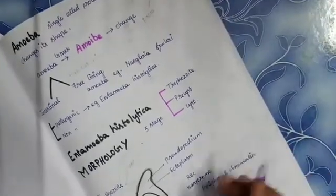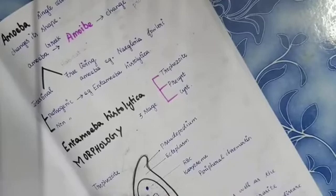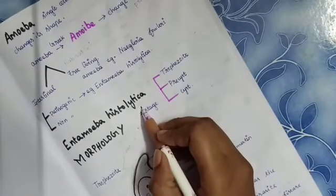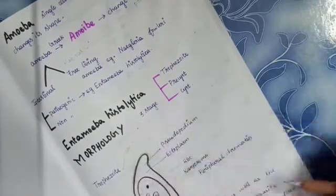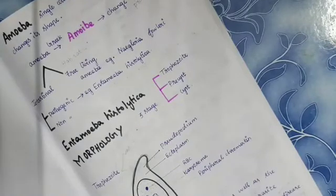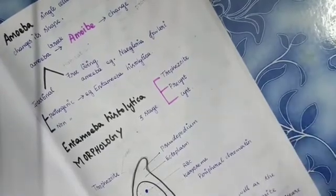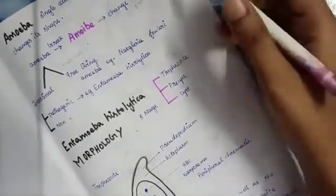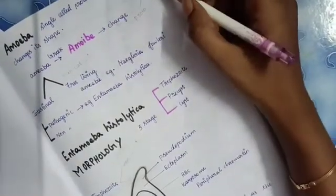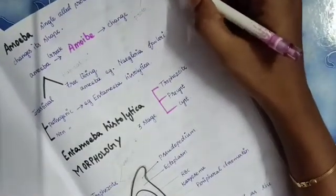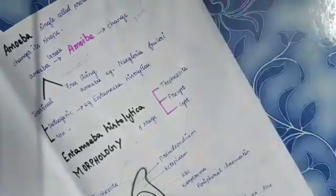In this video, let's see about Entamoeba histolytica. Before going into the brief concept of Entamoeba histolytica, first you should know where it is placed. It is placed under the category of parasite. Then what is parasite? Parasite is an organism who is dependent on another organism for its nutrition and survival.